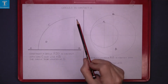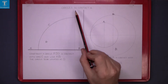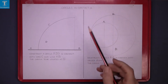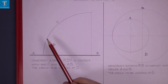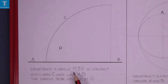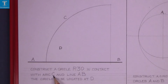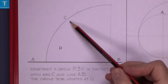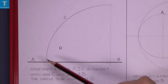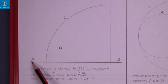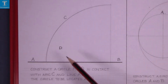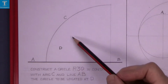This exercise is circles in contact 4. The first question is to construct a circle of radius 30 in contact with arc C and line AB. The circle is to be located at position D.